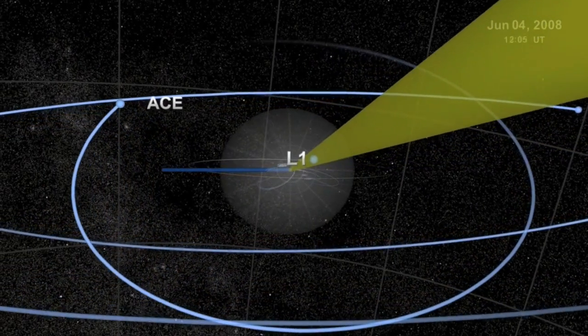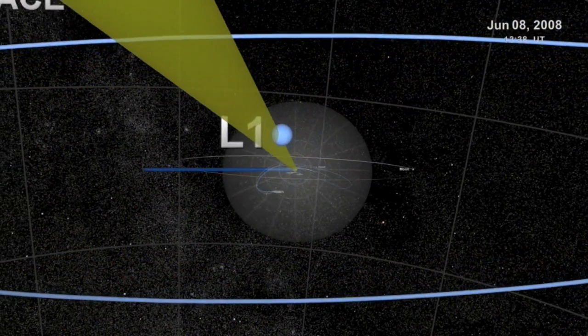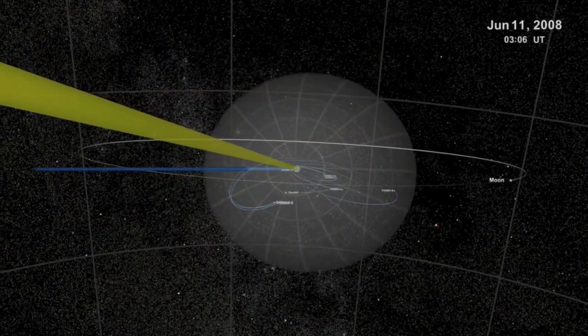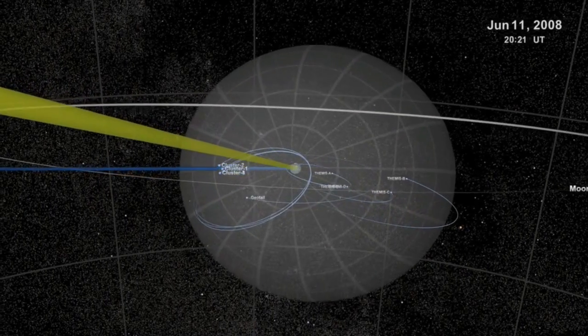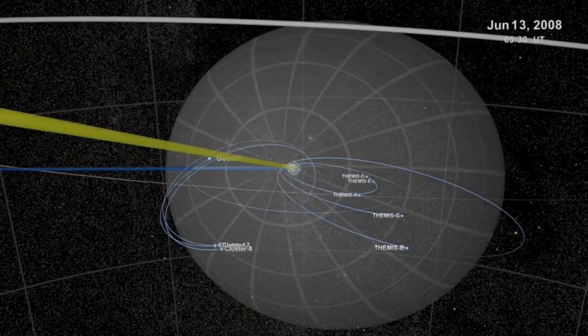Notice how L1 exists well in front of the magnetosphere. This part of the solar system is fully bathed in the solar wind, without the protection of Earth's magnetic shield. Therefore, it's extremely useful for studying solar activity without interference from the Earth.